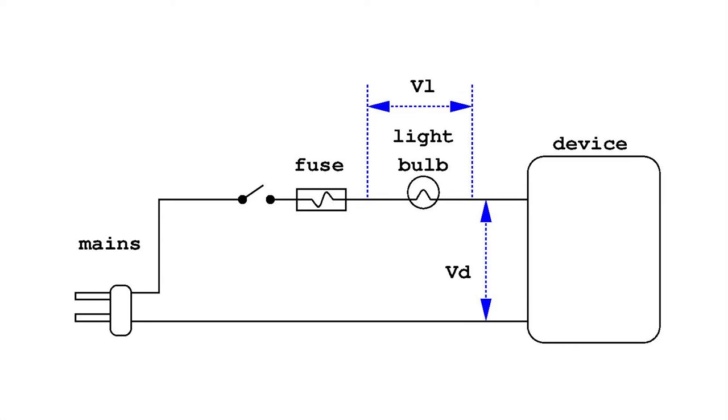Depending on the current, there is a voltage differential across the light bulb which is subtracted from the voltage differential across the device that is protected in this way. If the device were completely short-circuited, the maximum current that would flow through this type of circuit would depend on the light bulb specification.